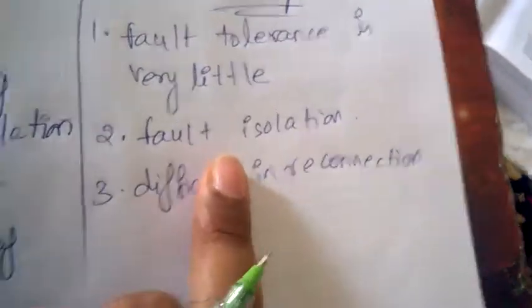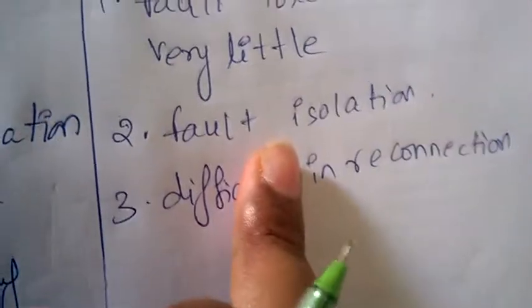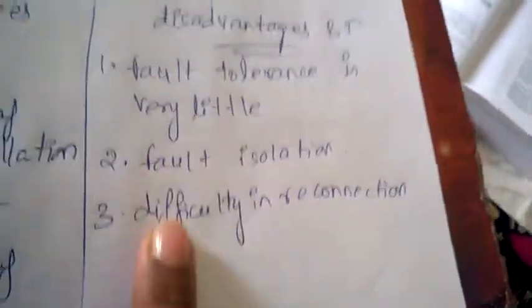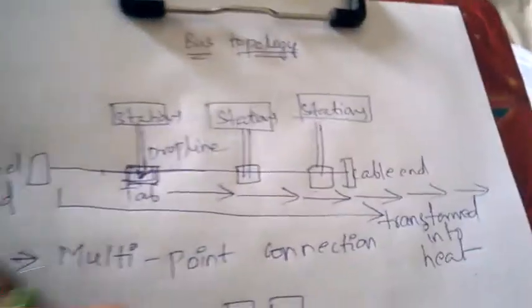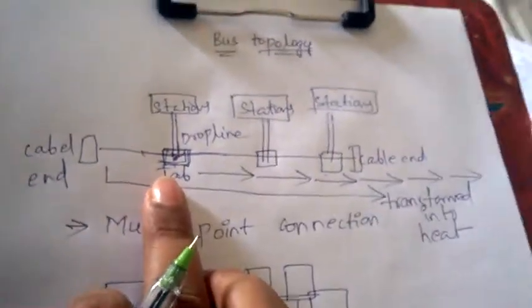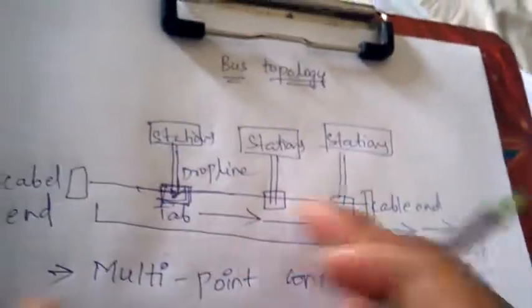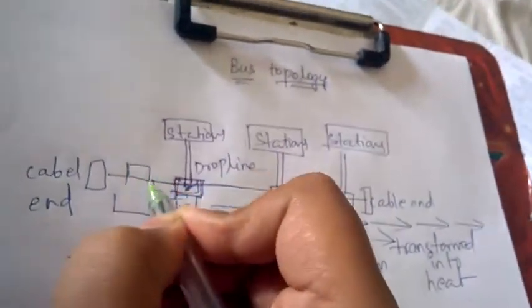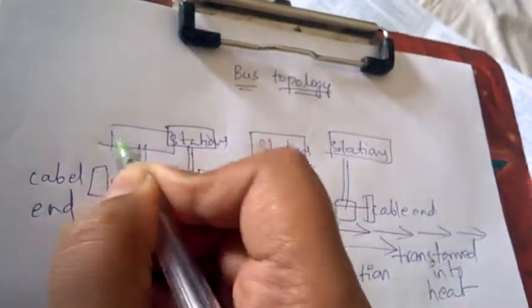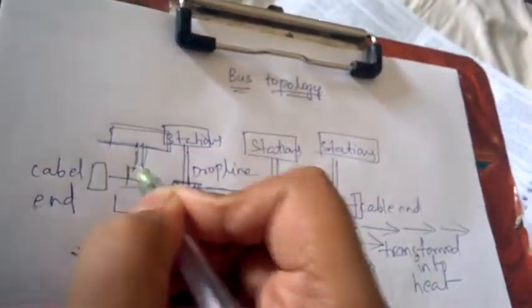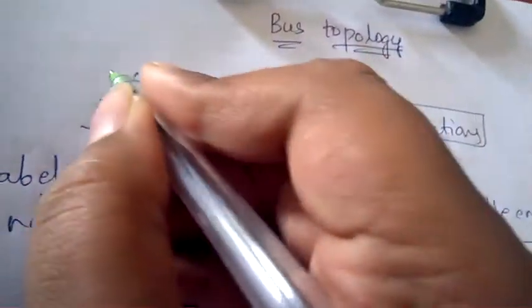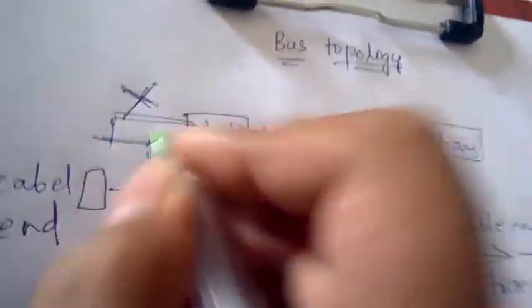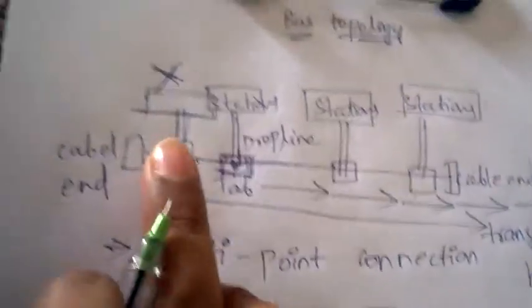The second disadvantage is fault isolation — it is very hard to find the fault in the network. The third disadvantage is difficulty in reconnection. If you decide to add another station or establish another connection to the bus topology, it is not easy; it takes time and effort to add new connections.